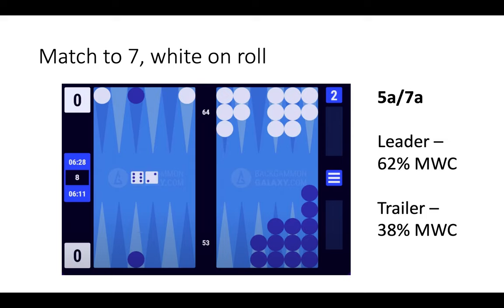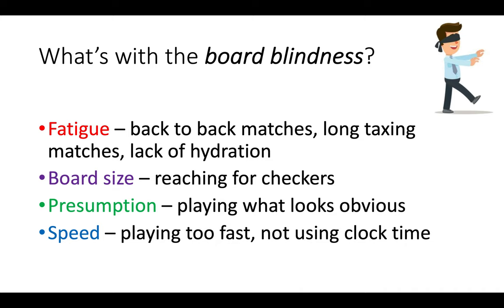Now this is an example of board blindness, but what are the reasons why this happens? The four main reasons are fatigue, board size, presumption, and speed.